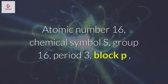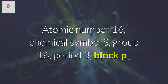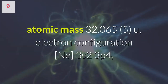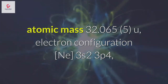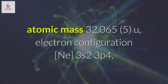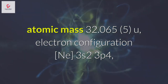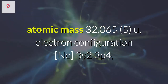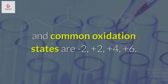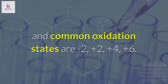Atomic number 16, chemical symbol S, group 16, period 3, block P. Atomic mass 32.065. Electron configuration: Ne, 3s2 3p4. Electrons per level: 2, 8, 6. It is multivalent and common oxidation states are −2, +2, +4, and +6.